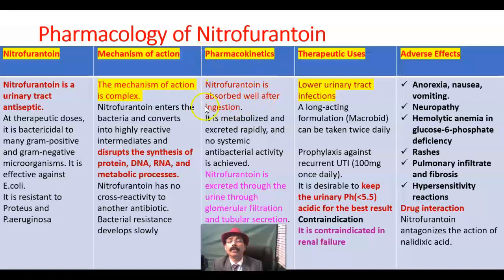Pharmacokinetics: nitrofurantoin is absorbed well after ingestion. It is metabolized and excreted rapidly and no systemic antibacterial activity is achieved. So, it is confined to the urinary tract, especially in the lower part, and it will not go to the other systems. Nitrofurantoin is excreted through the urine through glomerular filtration and tubular secretion.